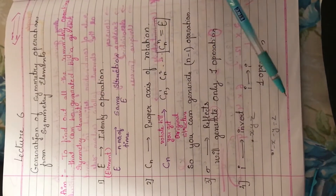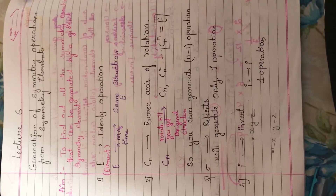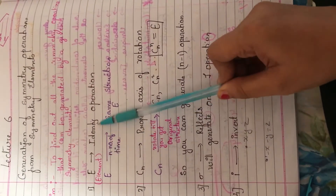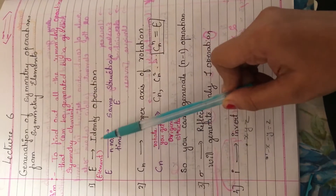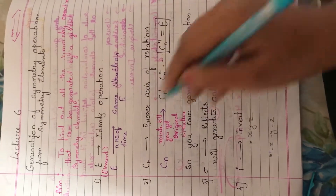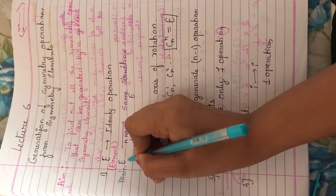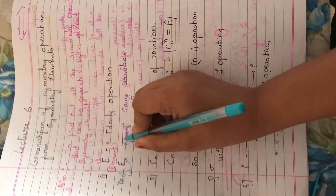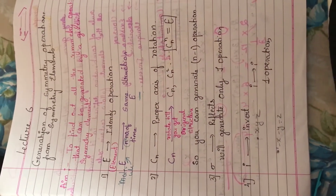These are some symmetry elements and accordingly the operations have been done. First is E. E is an identity operation — no matter how many times you apply it, you will get the same structure. So when a molecule is given E for N number of times, you will get the same identical structure.